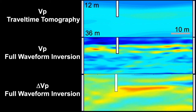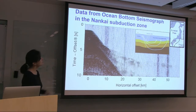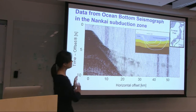Before we move on to time-lapse, let's go back to basic full waveform inversion. Here I'm showing ocean bottom seismograph survey data from a controlled source near the Nankai Subduction Zone in Japan. This data shows a lot of traces from left to right at a particular ocean bottom seismograph location. The vertical axis is time, so we see waves arriving at a certain time. You see a lot of details and also additional details at far offset.